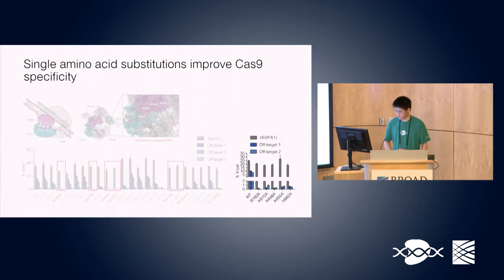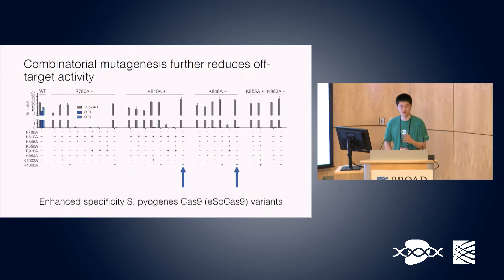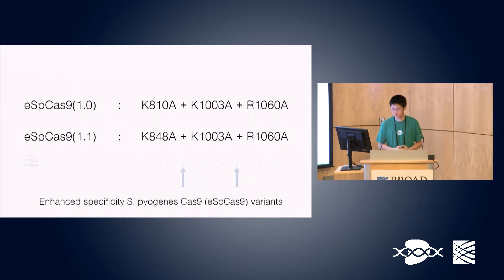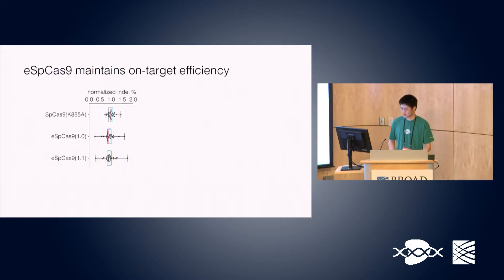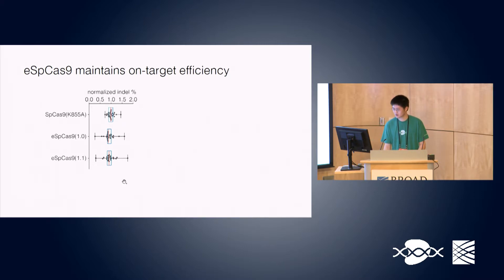This was a very promising start. We tested these mutations at a different target site and saw a lower but detectable level of off-target activity. After doing some optimization, we came up with two variants which we call eSpCas9, consisting of three alanine mutants along the cleft. By characterizing these, we found they have very similar on-target efficiencies to wild-type Cas9 — every dot here is a different guide, and a value of 1.0 means the same efficiency as wild-type. Most guides cluster right around 1, with a mean of about 0.95.